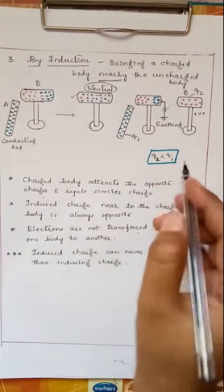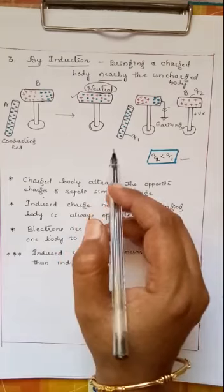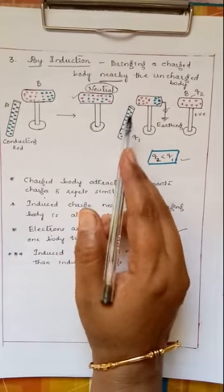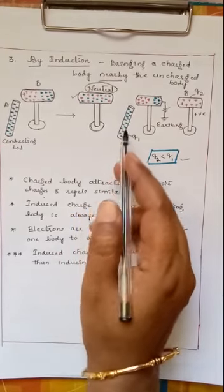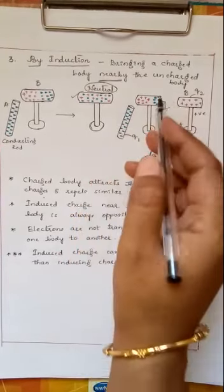So one more very important point here you can see is this conducting rod is heavily charged, but when I charge the body B we are going to see that if I take charge on this as suppose q2 and charge on this rod as q1, we are seeing in this method a very important point is always the charging body will have more charge than the induced charge.